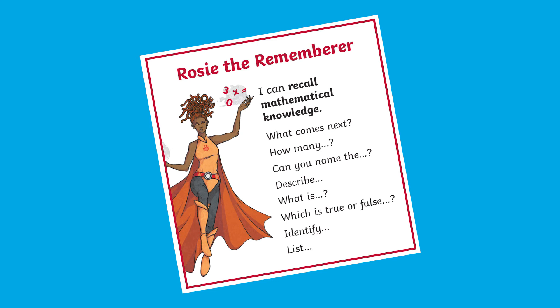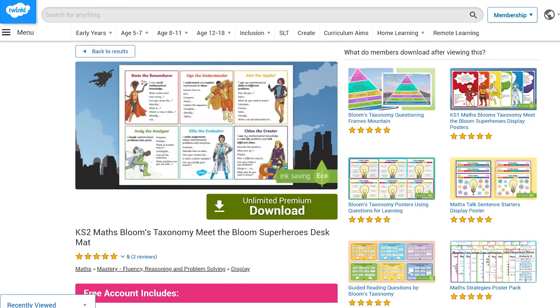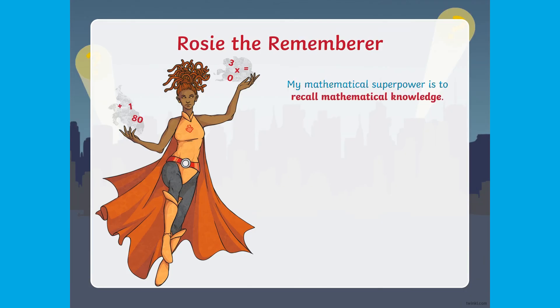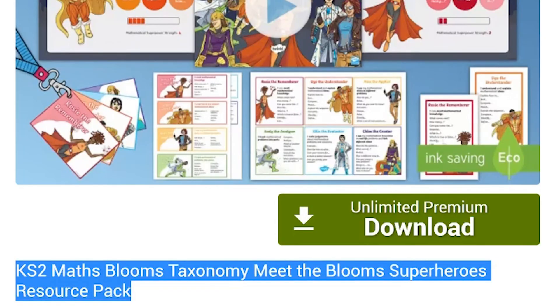Rosie the Rememberer can help them get started with recalling their past maths knowledge, and each stage of Bloom's Taxonomy is represented by a different superhero. Twinkl's range includes a desk mat, a visual aid that's easy to reference for your children, a PowerPoint so you can introduce the superheroes and get your children started on their independent learning, and you can also find posters and lanyards to support them further.